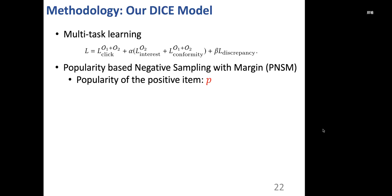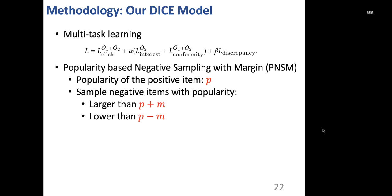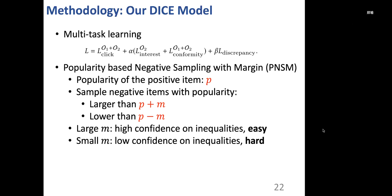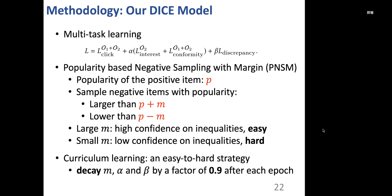We propose popularity-based negative sampling with margin, shortened as PNSM. Suppose the popularity of the positive item is P. Then we will sample negative items with popularity either larger than P plus M or lower than P minus M. With large M, we have high confidence on the inequalities from the colliding effect, so the task is easier for the model. And with small M, we have low confidence on those inequalities, so the task is much harder. We adopt an easy-to-hard strategy to train the DICE model.